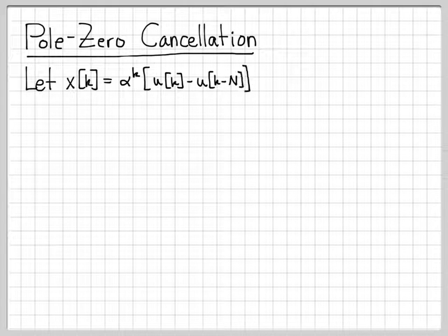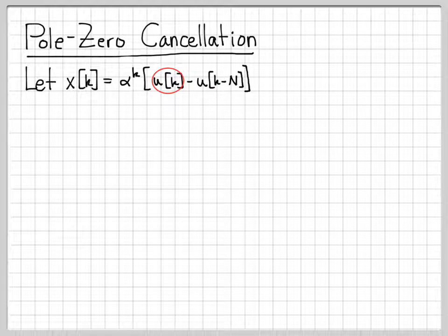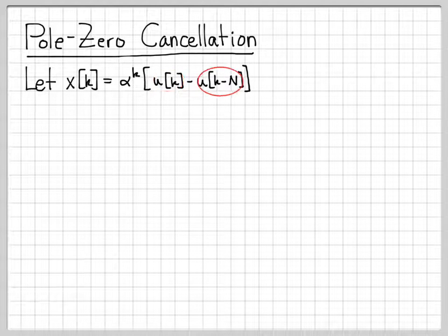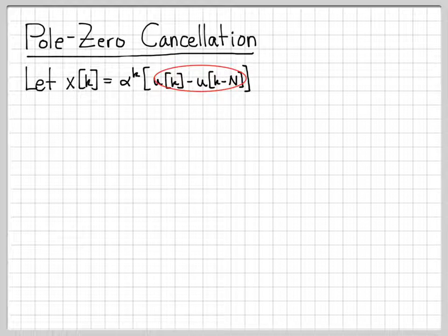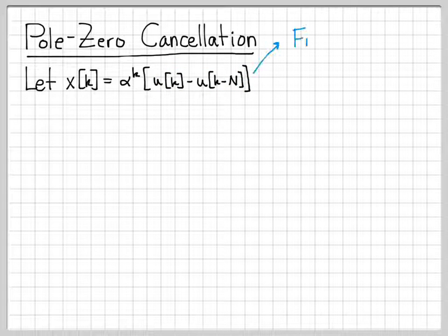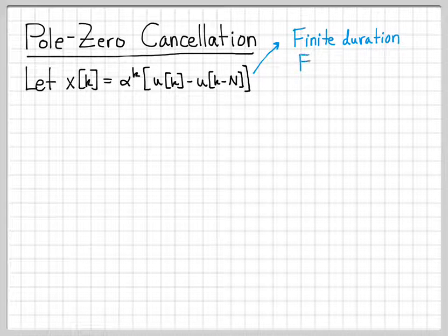So we're going to work with a discrete time signal x[k], and x[k] equals alpha to the k times the quantity u[k] minus u[k-N]. So this is our unit step function. This one right here turns on at time 0. This one here turns on at time k equal capital N. So by subtracting these two pieces, we end up basically with a finite width pulse function that is on at time 0, and then at time capital N it actually goes to 0. So this signal is actually a finite duration signal.